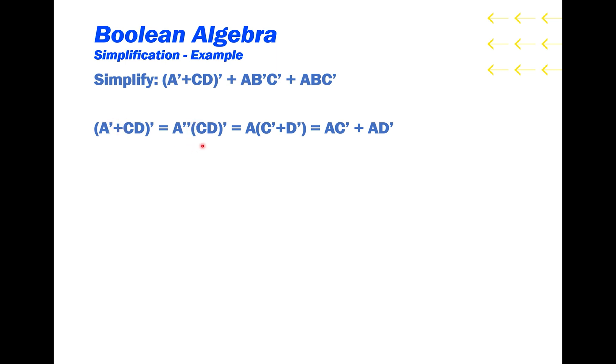The second step is to invert all of the terms, replacing the variables with the inverse, and replacing the AND gates with ORs. Here, A prime prime is just A, while the inverse of C and D is C prime or D prime. And the final step is to do any distribution. So we distribute the A into the C prime or D prime to get A and C prime or A and D prime.